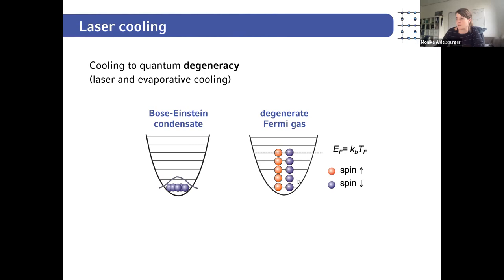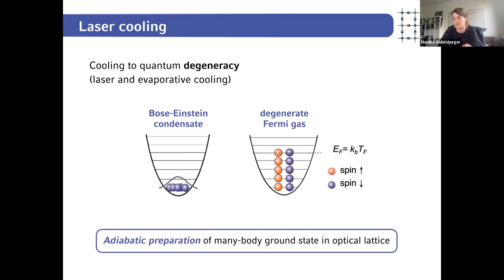For bosonic atoms: below the critical temperature of a Bose-Einstein condensate, atoms essentially all occupy the lowest energy state — in a harmonic trap, the lowest Gaussian mode — with between 10⁴ to 10⁶ atoms sharing the same wave function. For fermionic atoms, we generate degenerate Fermi gases, where two spin components fill up all energy levels below the Fermi energy.